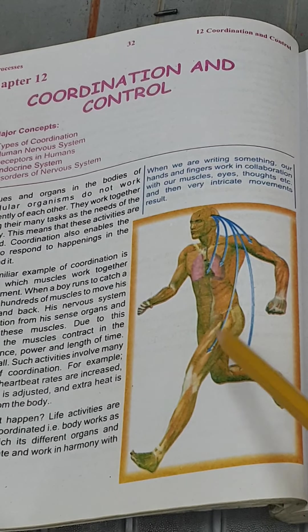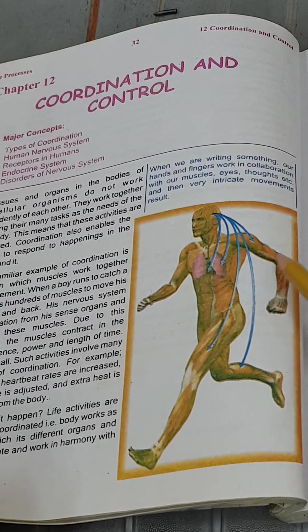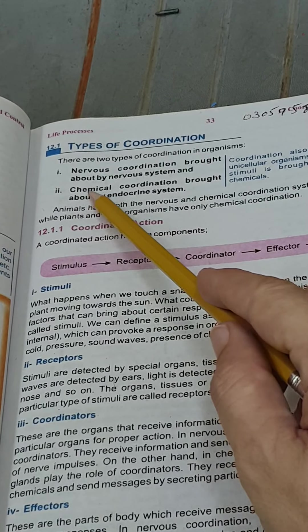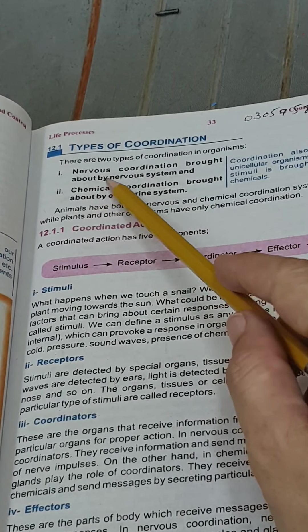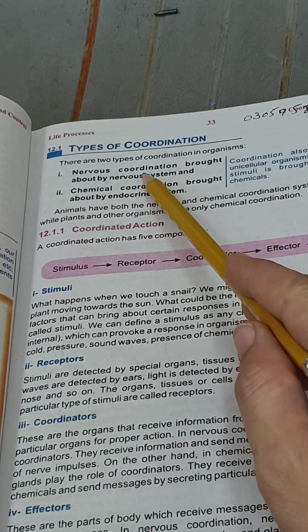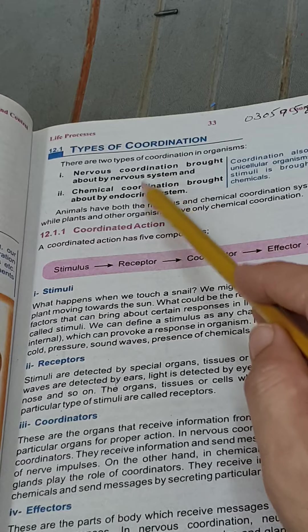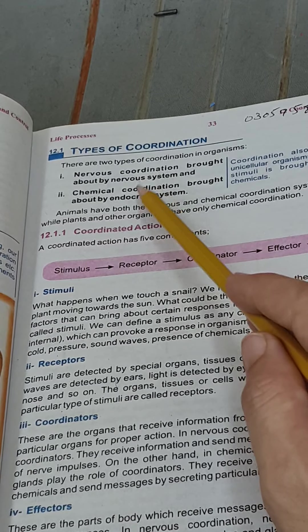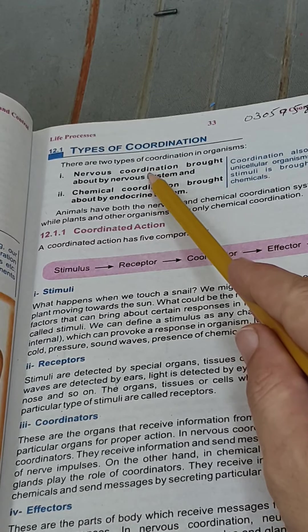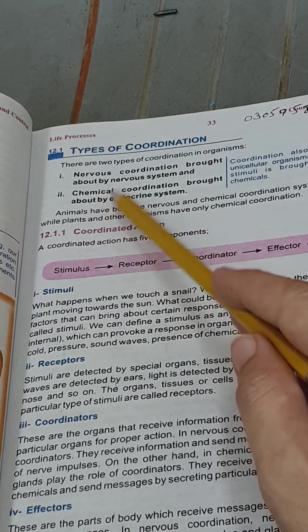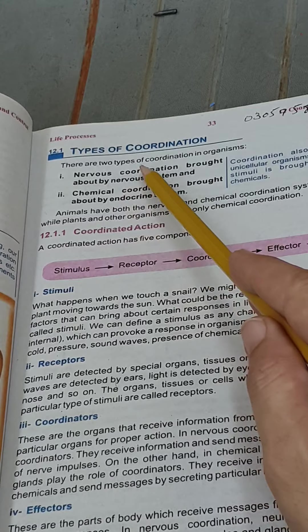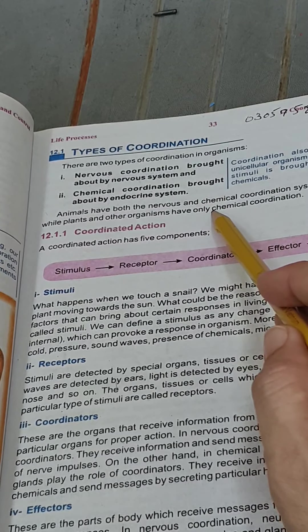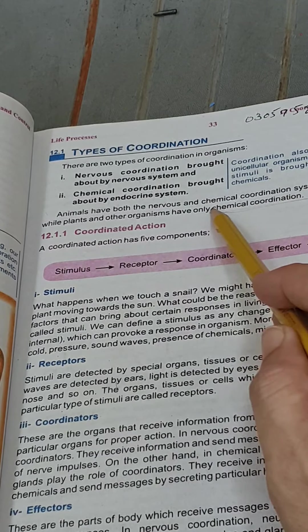In the human body there are two types of coordination: nervous coordination and chemical coordination. Nervous coordination is brought about by the nervous system, while chemical coordination is brought about by the endocrine system. We will discuss both types in detail in this chapter. Plants have only one type of coordination, which is chemical coordination — they have no nervous coordination.